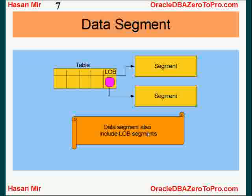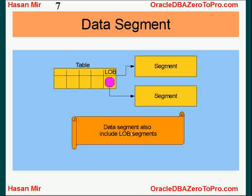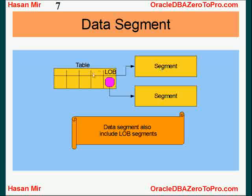There's a data type in Oracle called LOB — LOB stands for large object. The data segment also includes LOB segments. You can choose to store LOB values in their own segment. For example, you created a table, and the whole table is residing in a segment. All the data in this table is sitting in that segment, which belongs to this table. When you create a table, a segment is created and the whole data goes in that segment, unless you partition the table. But if you have a LOB column in a table, you can choose to store the LOB value in a separate segment.